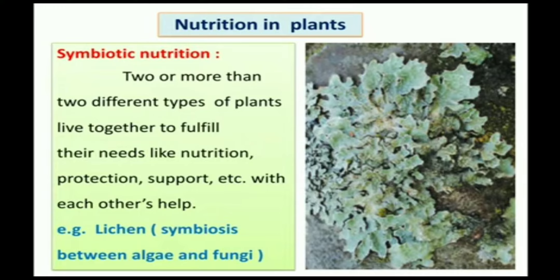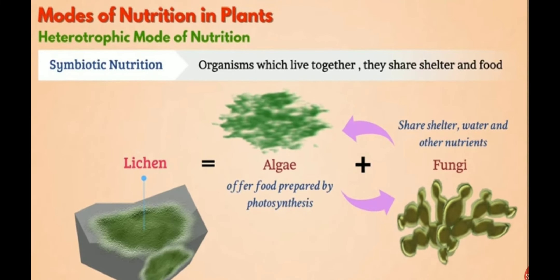Lichen is an example of symbiotic nutrition between algae and fungi. Organisms which live together share shelter and food. The fungi provide shelter, water, and other nutrients to the algae. In return, algae offer food prepared by photosynthesis, because algae is green in color and can carry out the photosynthesis process. So algae share food with fungi.